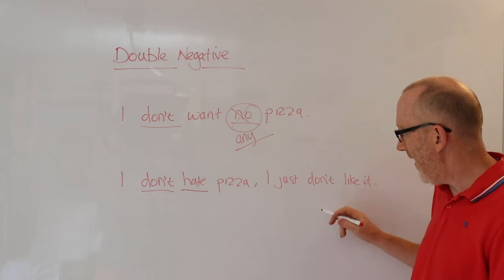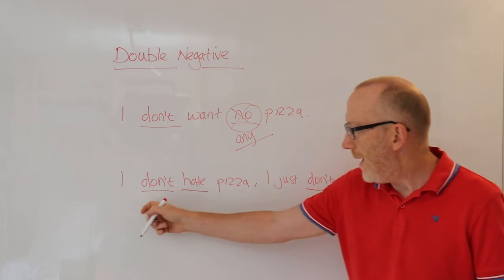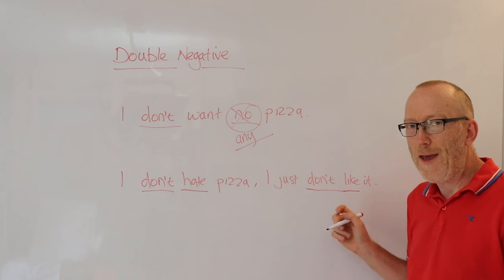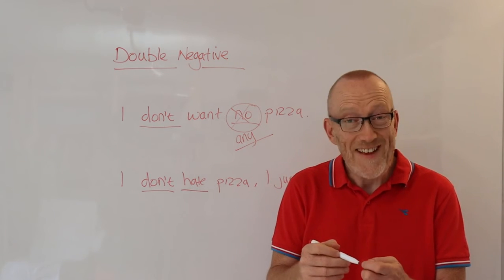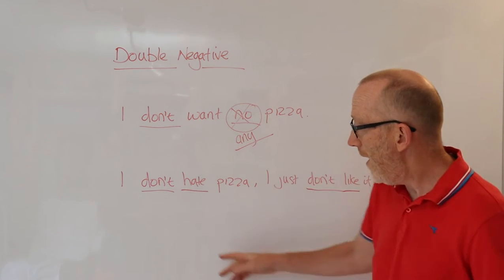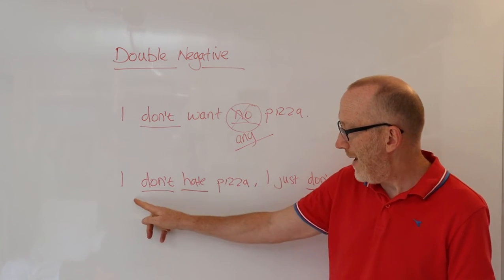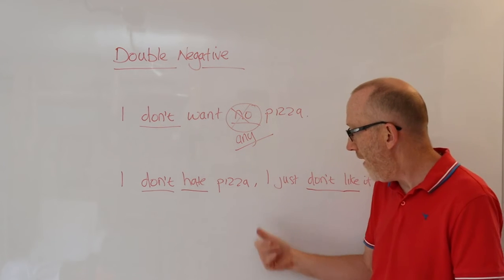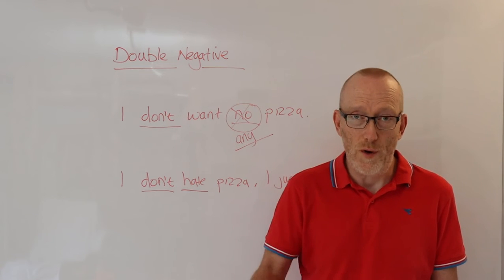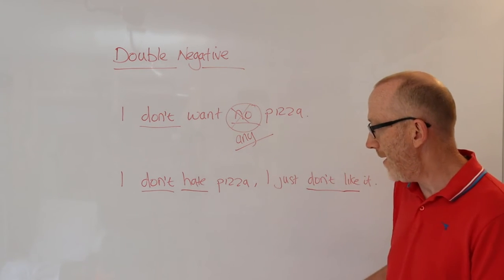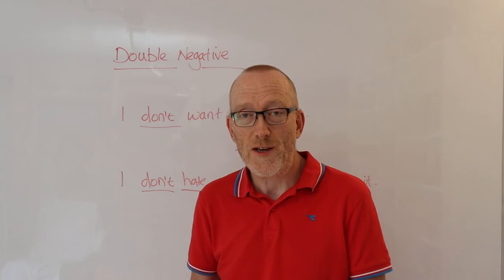I just don't like it. And again, we have another negative over here. So I don't hate pizza. I just don't like it. So we actually have lots of negatives in our sentence, but this sentence is grammatically correct. I don't hate pizza. This clause has one negation, one negative. The second clause, I just don't like it, has one negative form. So this is actually grammatically correct and a perfectly acceptable way to express yourself.